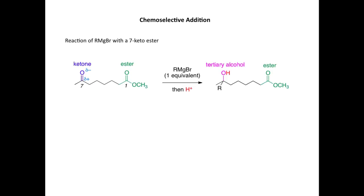Let's now have a look at a couple of examples, looking at chemoselective addition reactions. The first example looks at the reaction of a Grignard with a 7-keto ester. Here is the starting material, which has an ester functional group and a ketone functional group separated by five carbons. On reaction with one equivalent of a Grignard reagent, it's the ketone that reacts selectively to form a tertiary alcohol. The ketone has the more electrophilic carbon atom, so the Grignard undergoes nucleophilic addition to the ketone, and on protonation of the oxygen we form a tertiary alcohol with this new bond formed.